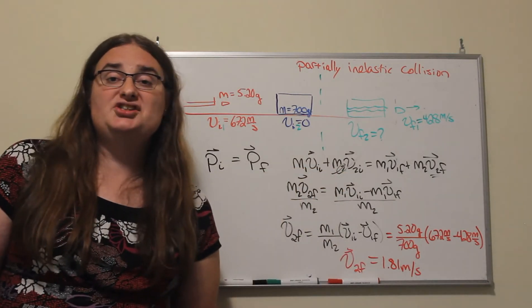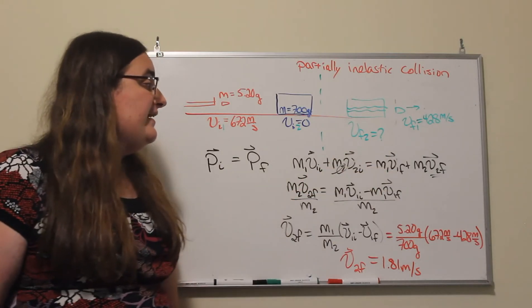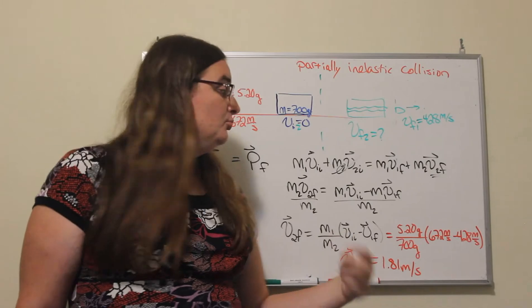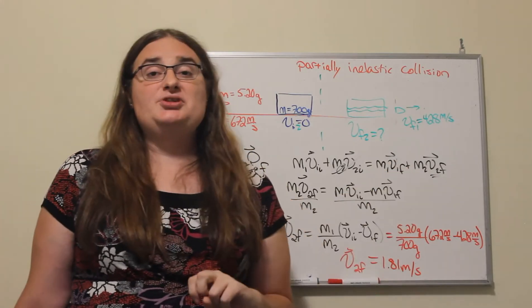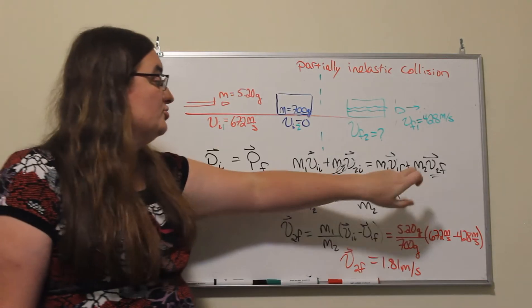After the collision we have the mass of object one times the final velocity of object one, plus the mass of object two times the final velocity of object two. So both of those terms are potentially there.